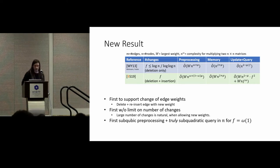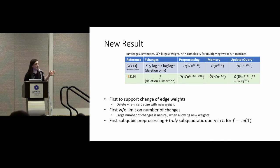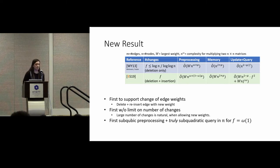When we look at preprocessing, we also have an improvement because assuming omega is more than two, our preprocessing is just better than the previous one. The memory, assuming weights are constant, is at least not worse. For the update and query complexity, the nice property is that we scale only polynomially in f, the number of deletions — so it doesn't matter how large a constant f is, we always have roughly n-squared-minus-mu query complexity, compared to the previous result that becomes almost n-squared for large deletions. The only downside is that our memory and update complexity scales with the largest edge weight.